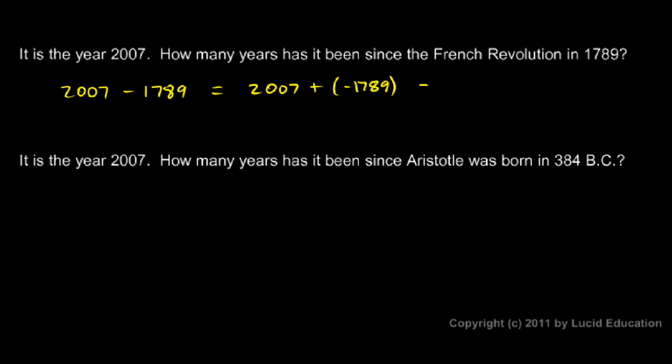So we do 2007 minus 1789 and we get 218. It's 218 years from the French Revolution in 1789 to the year 2007.